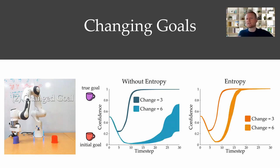But if the human changes their mind after the robot becomes confident that they want to reach the red cup, they get stuck. And this only gets worse the longer they wait before changing their mind.